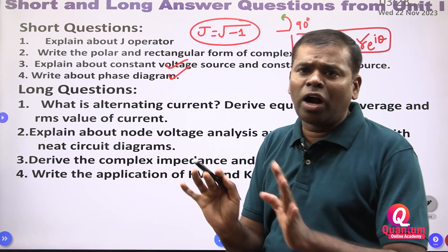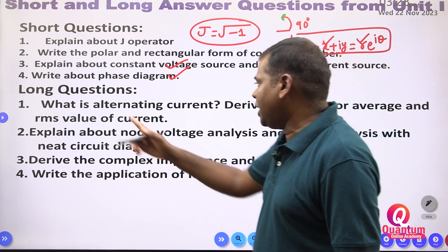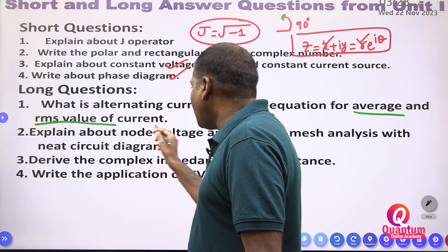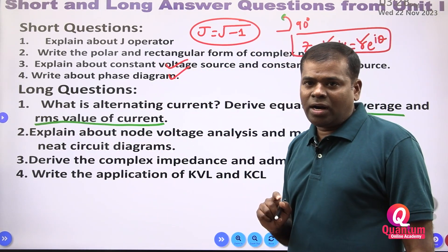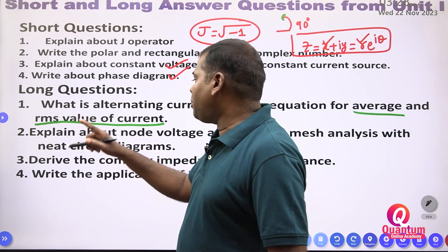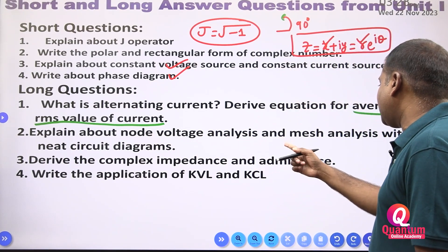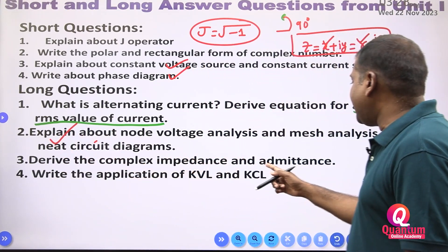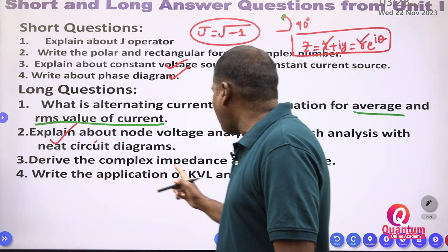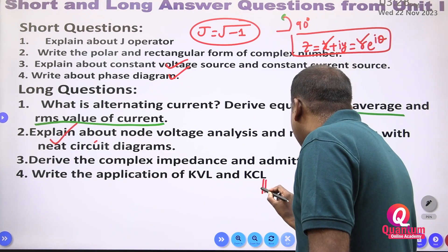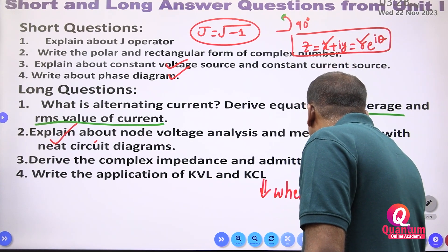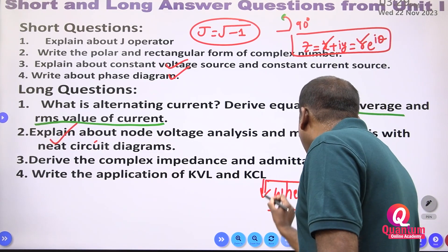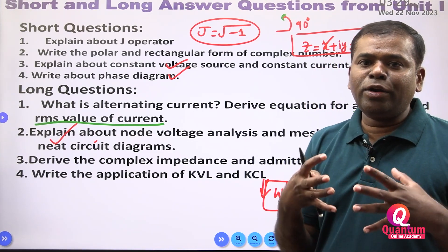Now for expected long questions from Unit 1: What is alternating current? Derive the average and RMS value of the current. Explain about node voltage analysis and mesh analysis with a neat circuit diagram. Derive complex impedance and admittance. Write the application of Kirchhoff's voltage law and current law — the Wheatstone bridge is an application of Kirchhoff's laws. These are the expected questions from Unit 1.